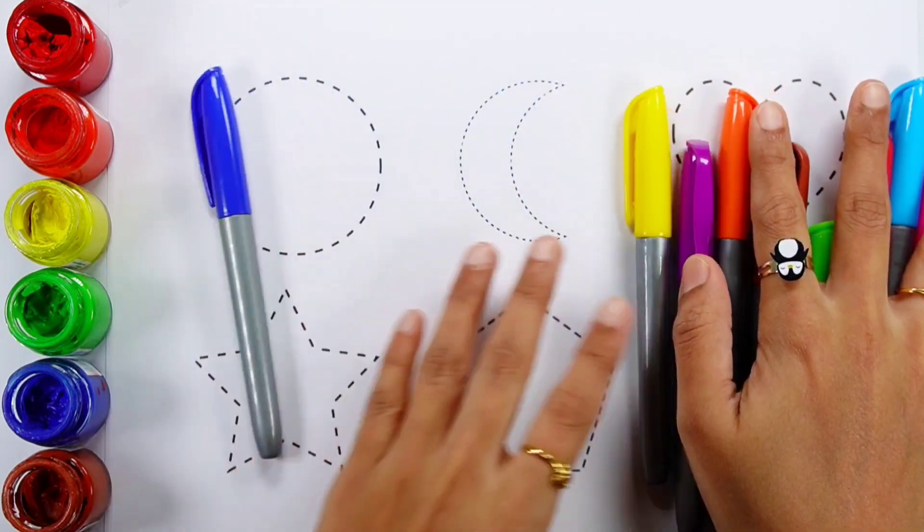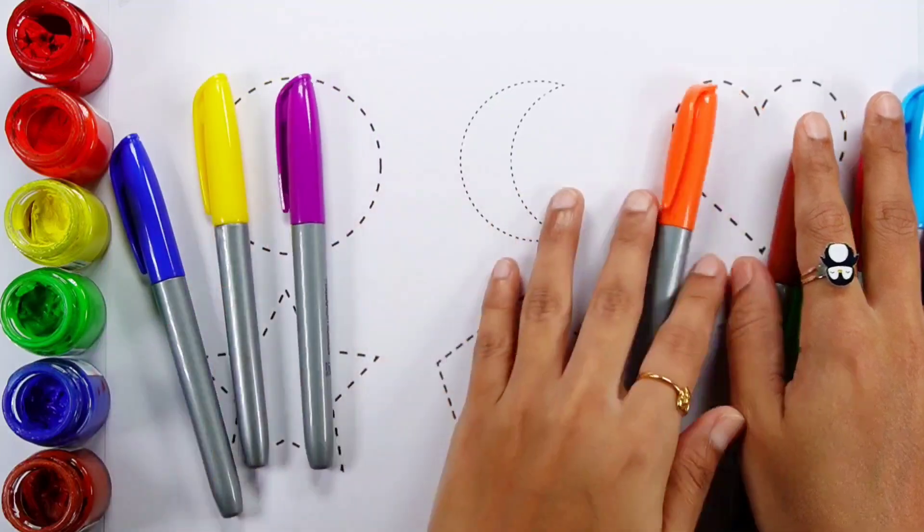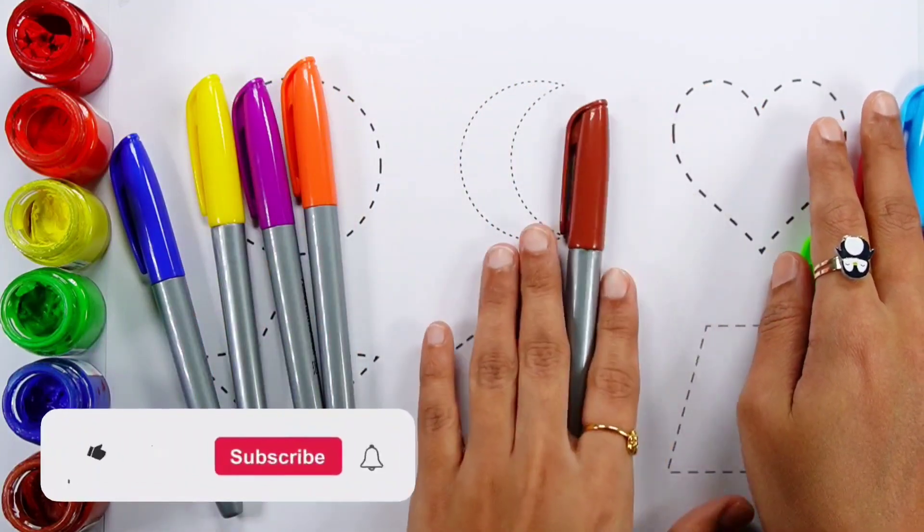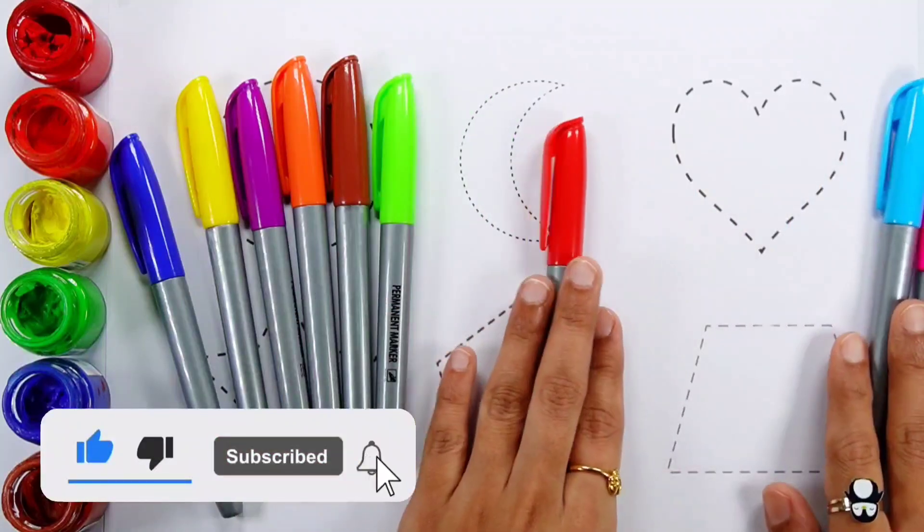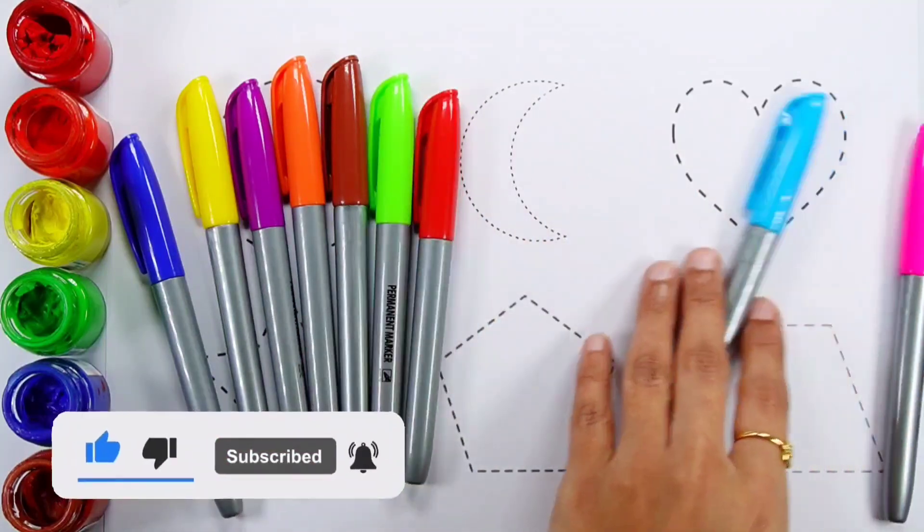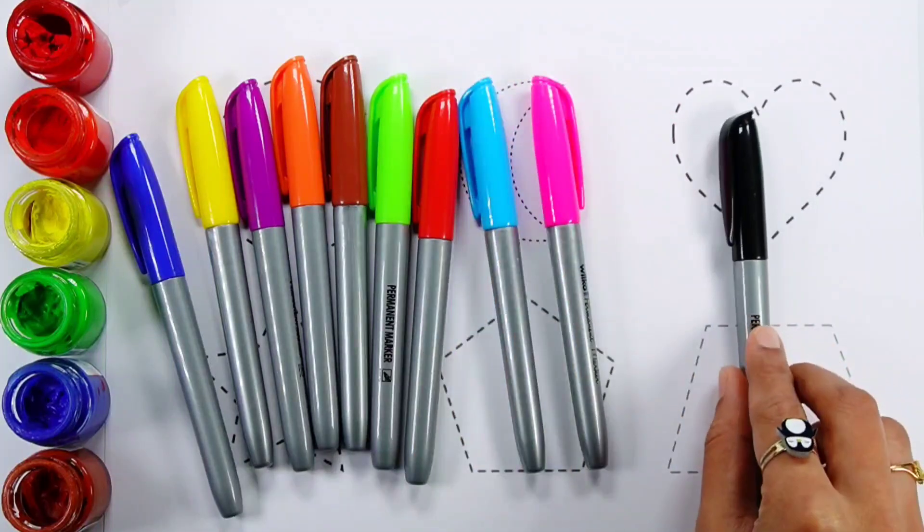Dark Blue Color, Yellow Color, Violet Color, Orange Color, Brown Color, Green Color, Red Color, Blue Color, Pink Color, Black Color.